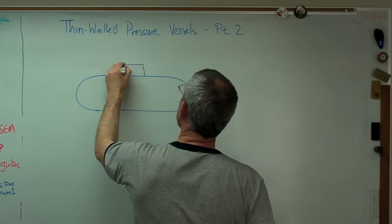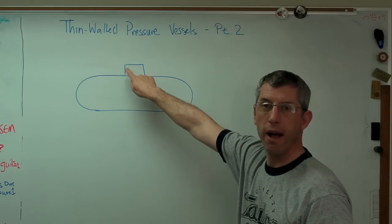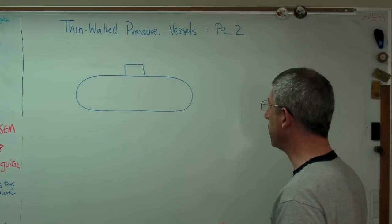A lot of times, they'll have a little cap on them. When I was younger, I always thought these looked like submarines. There's just a valve under there. That's not part of the pressure vessel. This is the pressure vessel. It's round and has hemispherical heads.